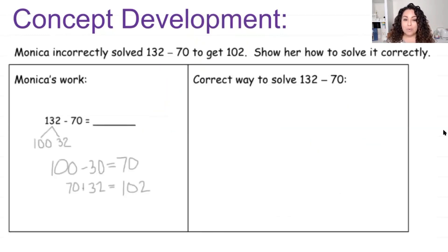I have one more problem for you. Monica incorrectly solved 132 take away 70 to get 102. Show her how to solve it correctly. Now I'm looking at Monica's work and she did a great job pulling out that hundred. But one mistake that I see is when she did this right here, she did 100 take away 30 is equal to 70. Now remember when we subtract, what we're supposed to do is we're supposed to do those numbers right there, 100 take away 70, and her answer should have been 30.